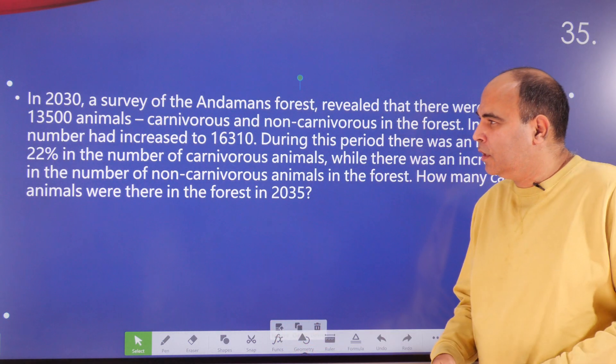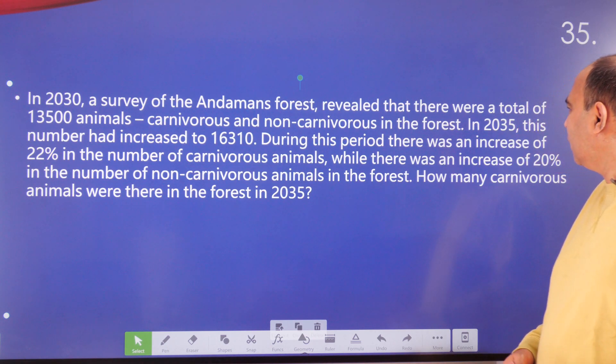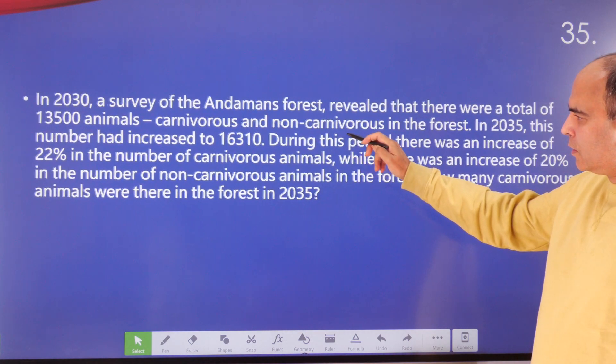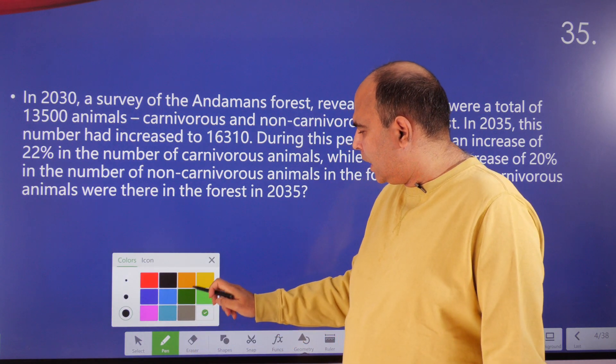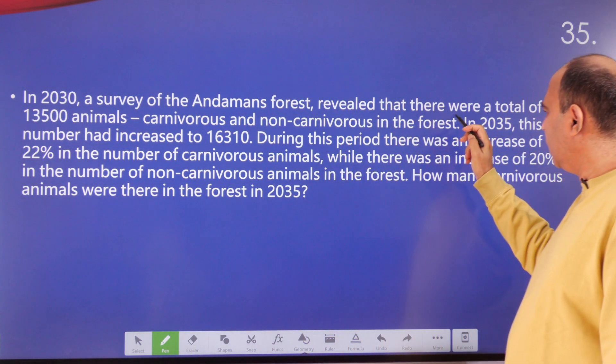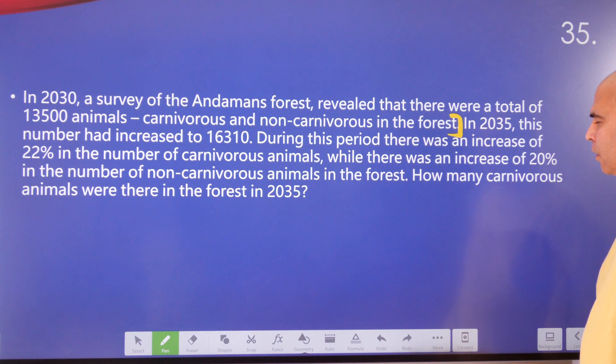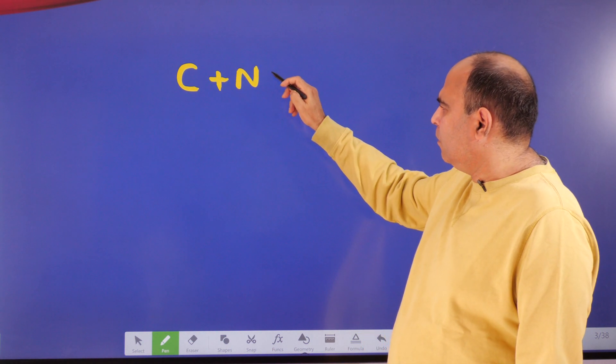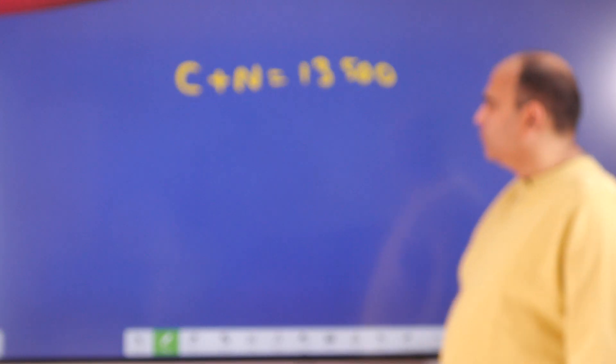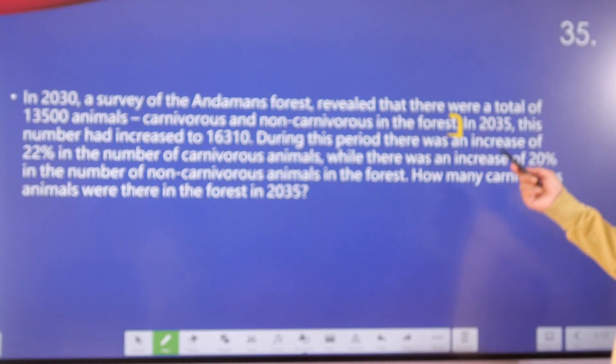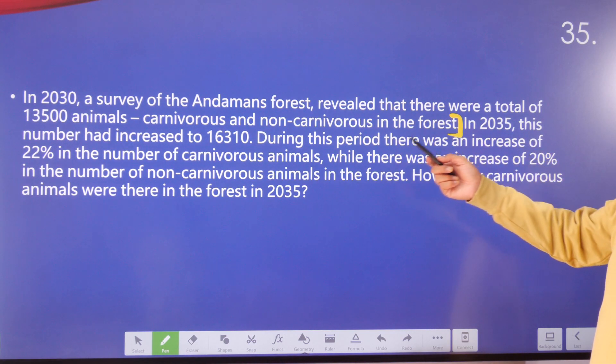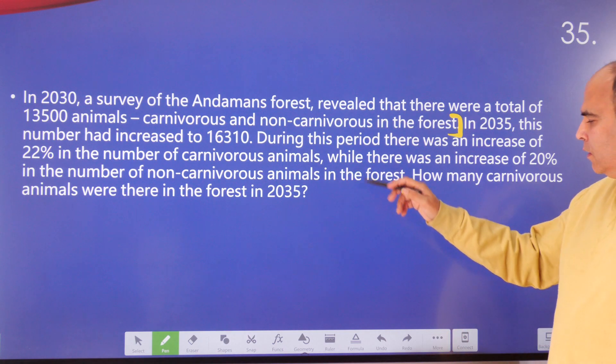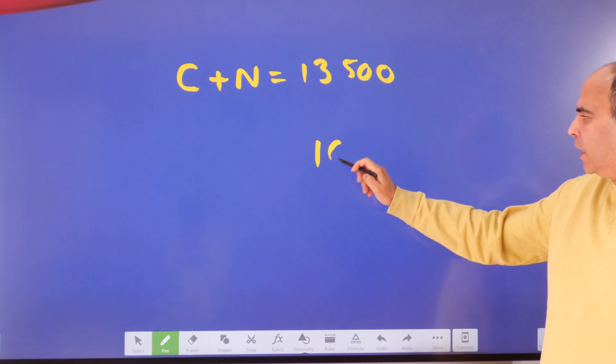Let's read the question. In 2030, a survey of the Abdomen Forest revealed that there were a total of 13,500 animals, carnivorous and non-carnivorous. That's the starting point in this question—that the survey revealed there are two kinds of animals: carnivorous and non-carnivorous. In 2030, the carnivorous plus the non-carnivorous animals were 13,500. First reaction is that equation. Keep going ahead. In 2035, this number had increased to 16,310.